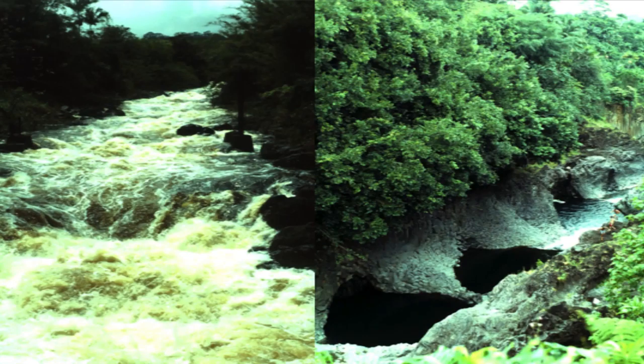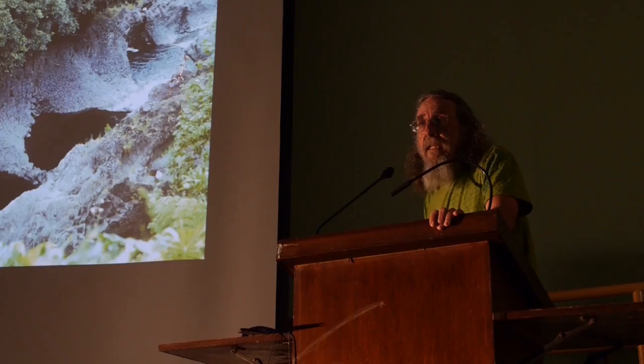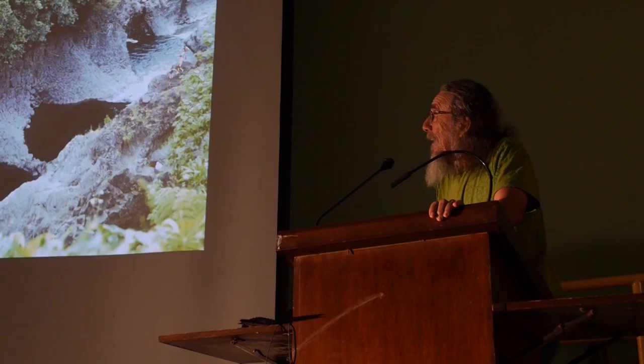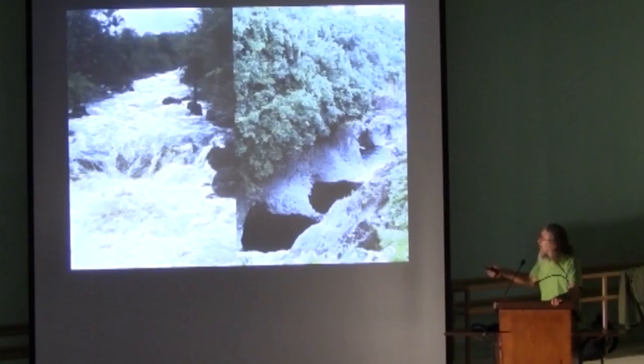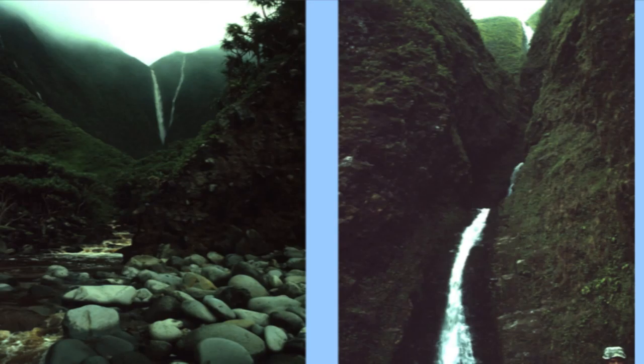Most of the channel cutting occurs during high flow events, so you don't see it happening — and you shouldn't, because you don't want to be there when it's happening. But in low flow you can see the results. This is Boiling Pots above Hilo and you can see these depressions are dug by swirling water as it goes down through this prismatic basalt. This is what erosion does and this is how it does it on solid basalt.